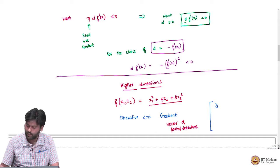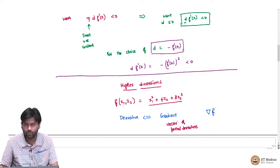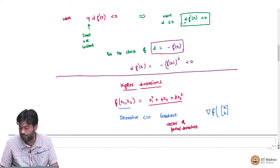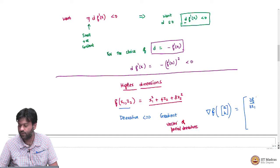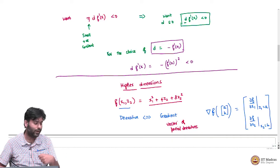Let's compute the gradient using the nabla symbol. Del f — instead of f-dash, we call it del f — which is the gradient of the function. At some particular point, every point is a vector in two dimensions for a two-dimensional function. Let's say the point is (a, b). The gradient is going to be a two-dimensional vector of partial derivatives: ∂f/∂x1 evaluated at x1 equals a, and ∂f/∂x2 evaluated at x2 equals b. This is the definition of the gradient of f at the point (a, b).